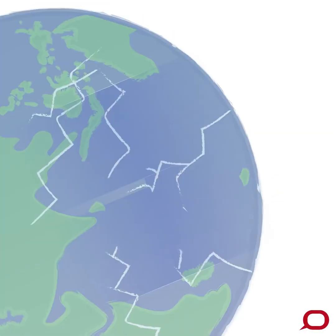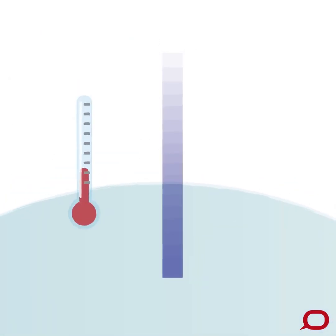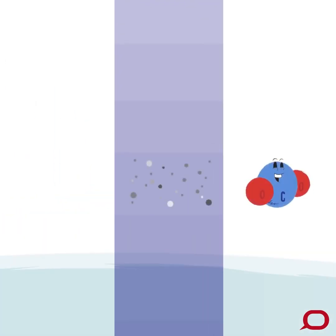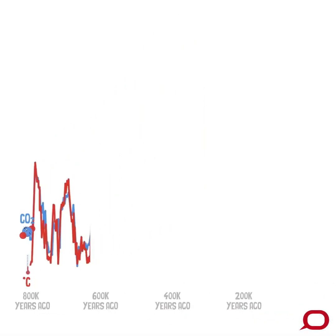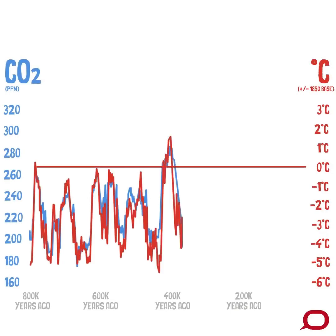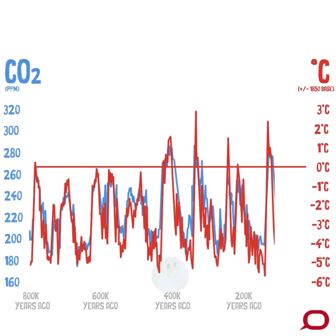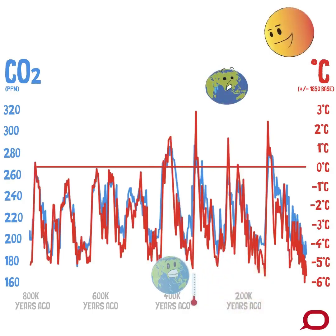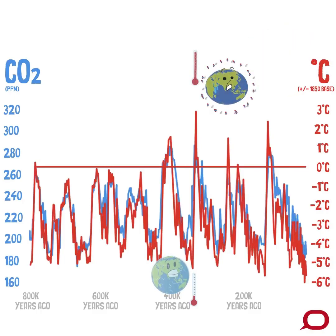Scientists use ice core records from Antarctica to reconstruct prehistoric temperature records, and those same ice layers trap little bubbles of CO2, which means we can see how they relate over time. Temperature and CO2 have fluctuated together through ice ages and warm periods, called interglacials. Slow changes in the earth's orbit around the sun initiated the ice ages, and CO2 was a natural amplifier, causing the global climate to warm and cool through each cycle.